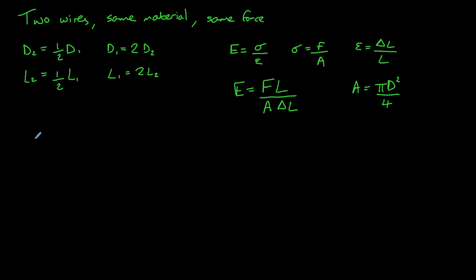So let's combine these into one equation in terms of extension delta L. So the extension of our wire is going to be equal to force multiplied by the original length divided by the cross-sectional area multiplied by the Young modulus. So if we replace the cross-sectional area, we'll get FL divided by pi D squared E divided by 4. And again, we can put the 4 up to the top, so 4FL divided by pi D squared E.